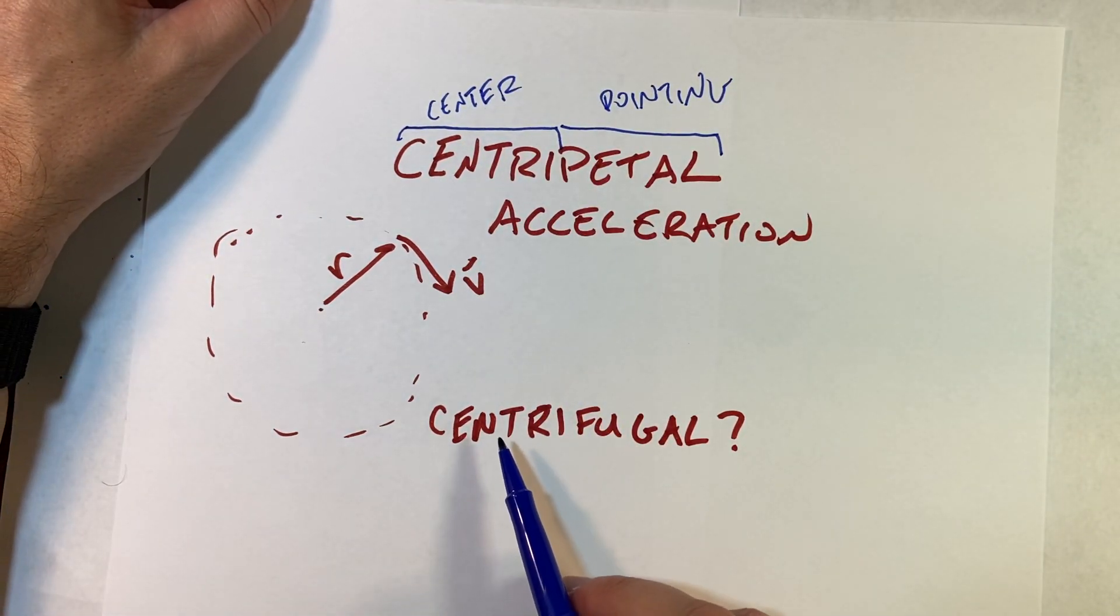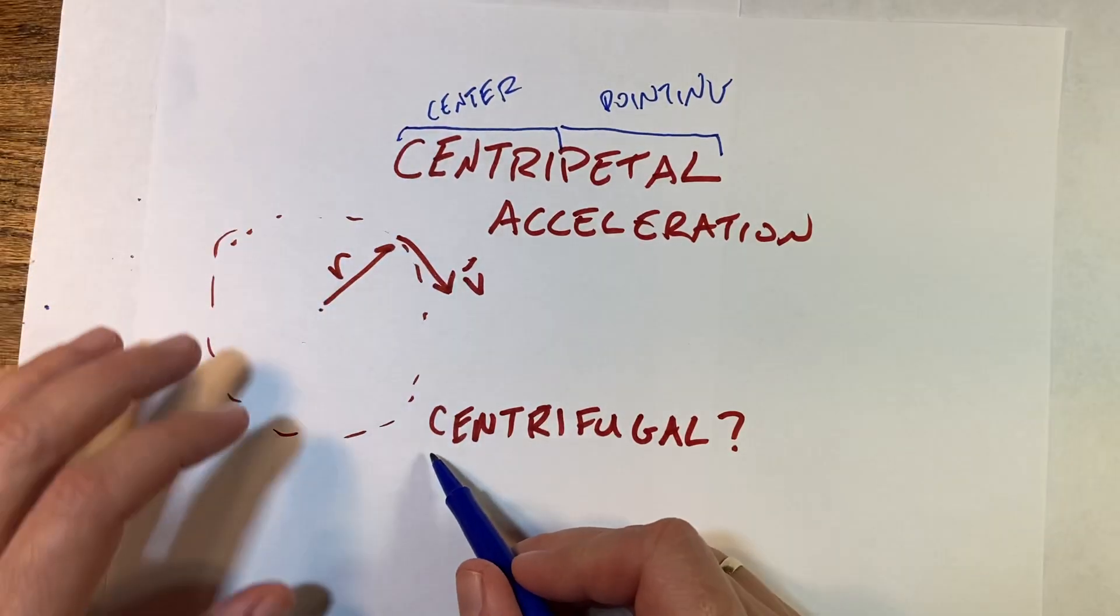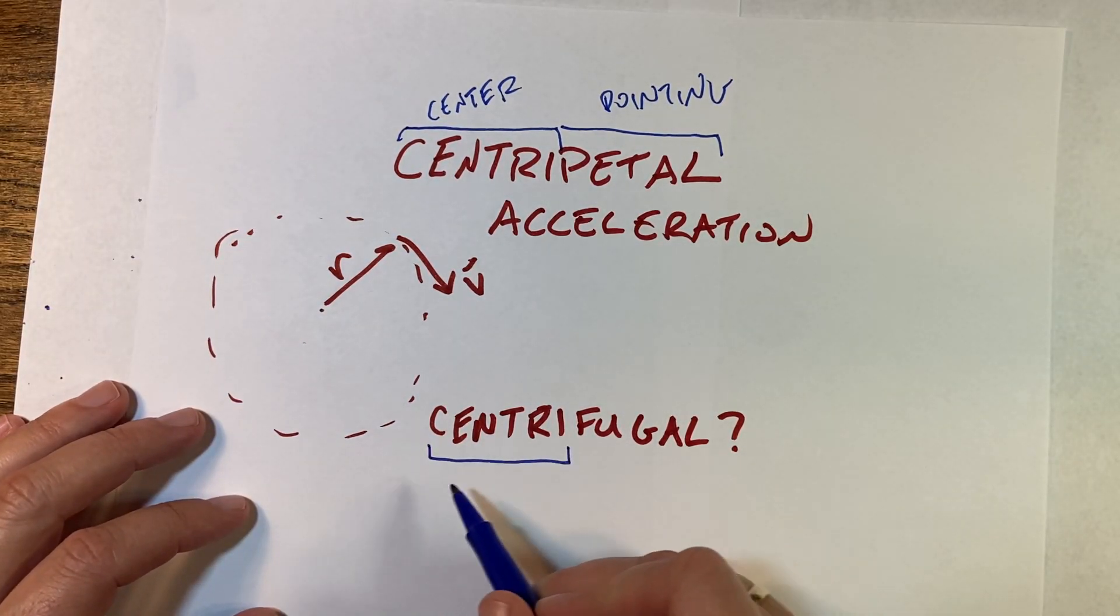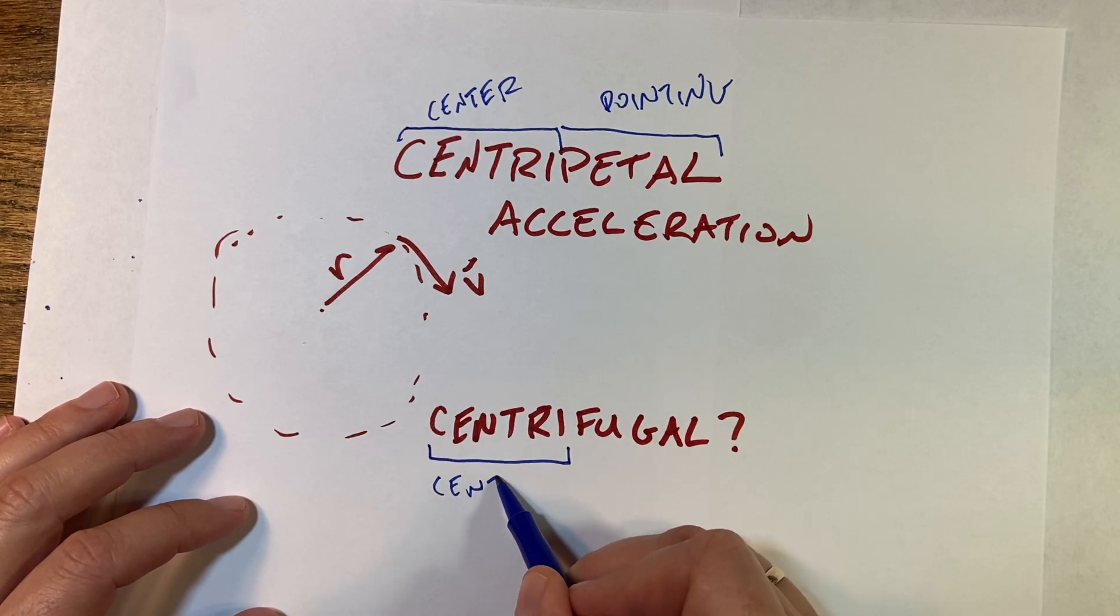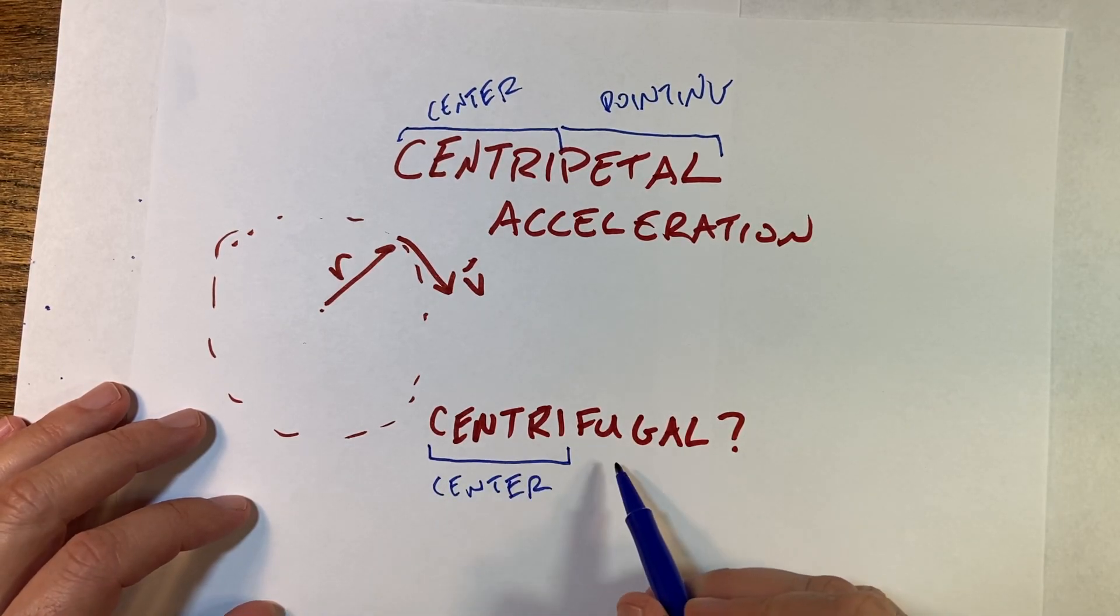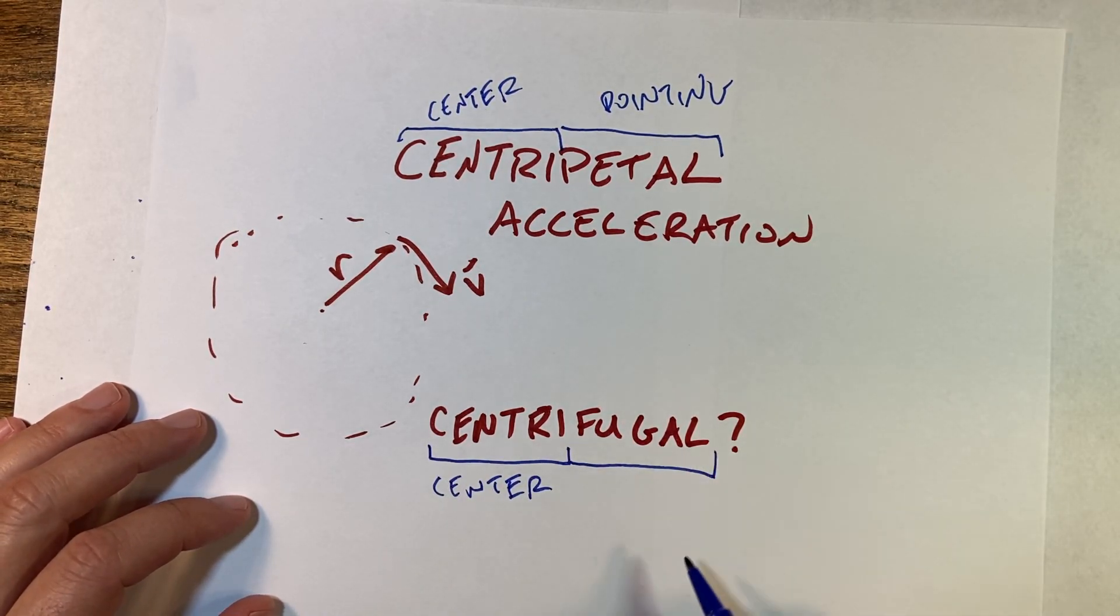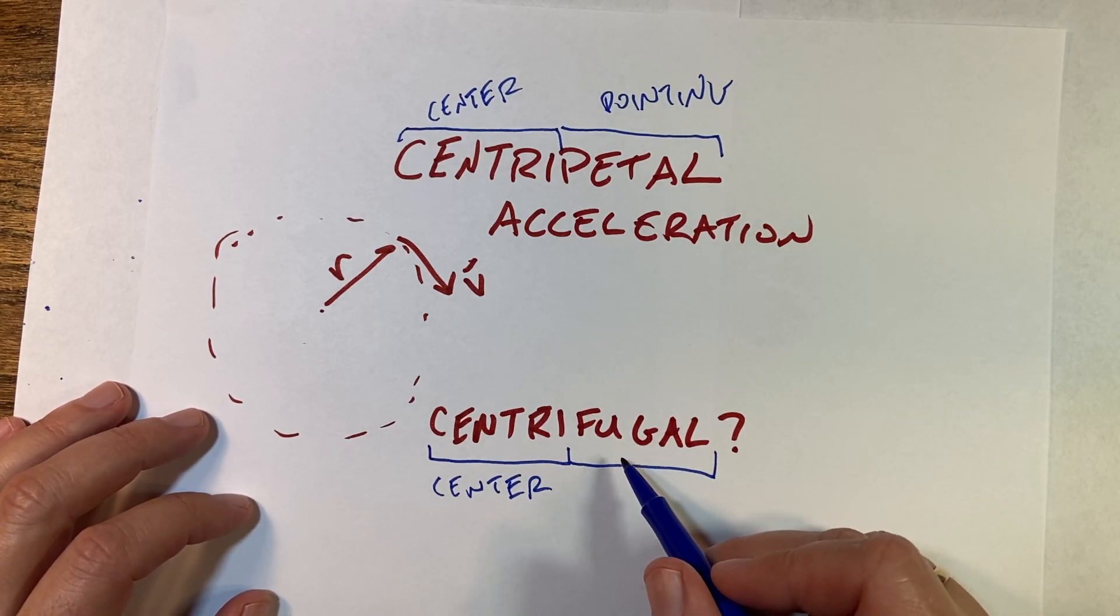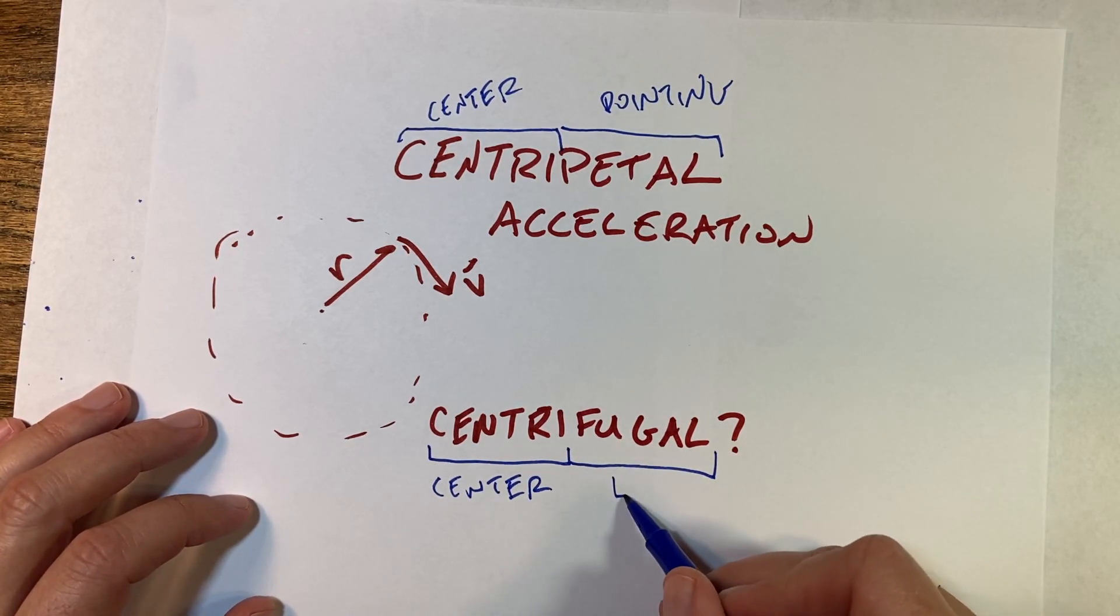But what about this word centrifugal? Here we have the same thing, center. Now what about this part? What does that mean? Well, fugitive—it's like that same thing, fleeing.